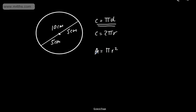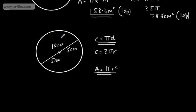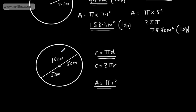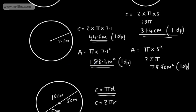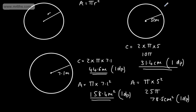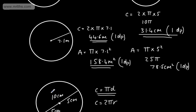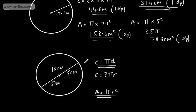If you're given a diameter, don't square it and then half it — that gives a completely different answer. Half it first, then square it, and multiply by pi. So the correct order is: halve the diameter to find the radius, square it, then multiply by π.